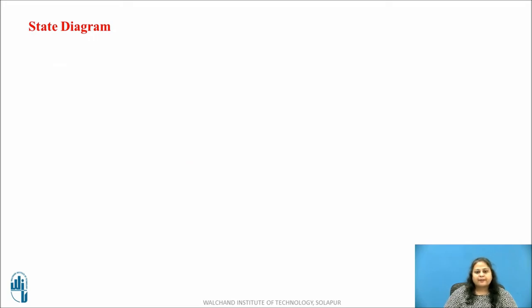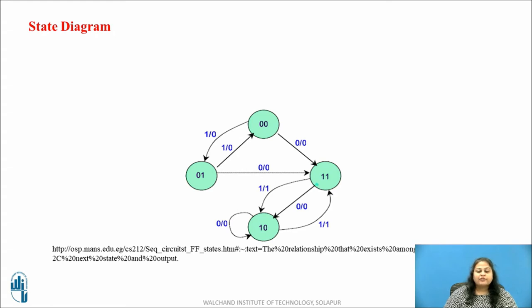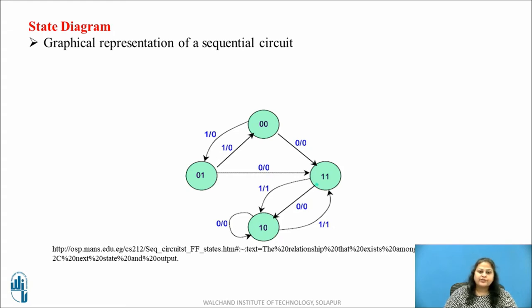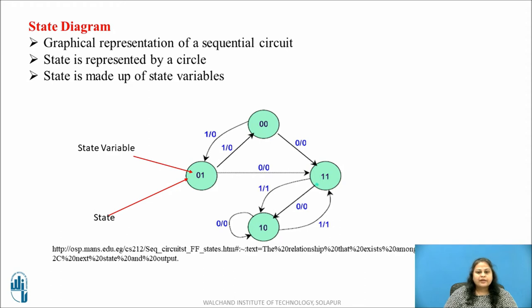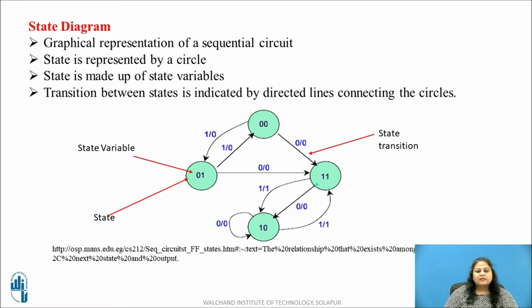Let us now discuss the state diagram. The state diagram shown is the graphical representation of the functioning of a sequential circuit corresponding to the state table we just discussed. The state is represented by a circle made up of state variables mentioned inside the circle. The state transition from the present state to the next state is indicated by directed lines or arcs connecting the circles. Along with each state transition line, the values of input and output associated with that transition are specified in a format separated by a forward slash. Thus, the state diagram makes it easy to visualize the functioning of a sequential circuit.